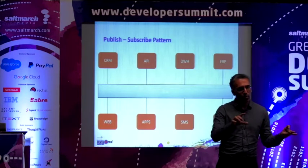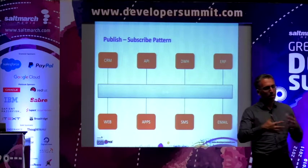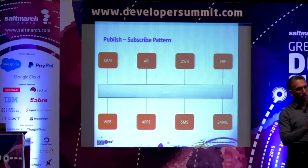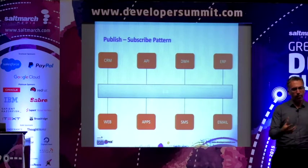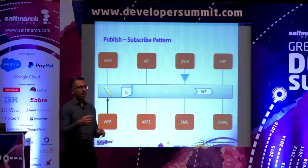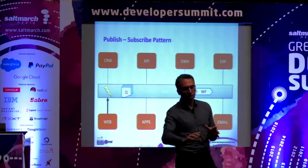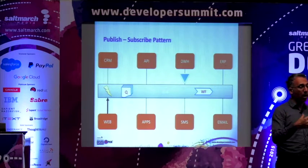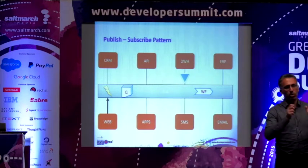When I want to add the ninth or tenth system, I don't have to create all the permutations of integration between the new application and all the others. I need to create only one: talk to the ESB. The ESB translates all the messages in and out from the application. Also, an ESB provides a message-driven pattern — I send a message from a web application, it's propagated into the ESB and can be processed by other applications that subscribe to that kind of message.